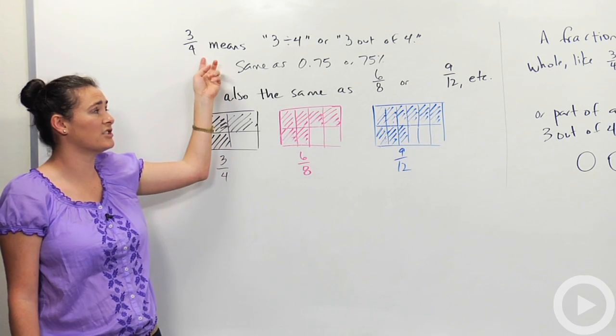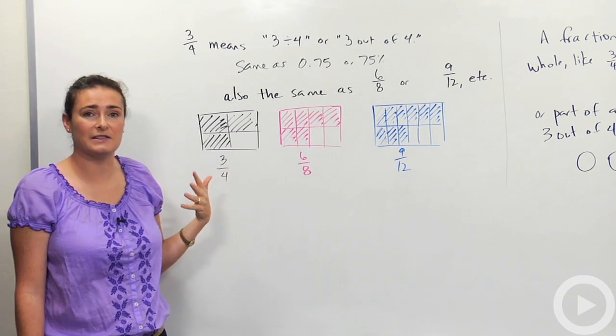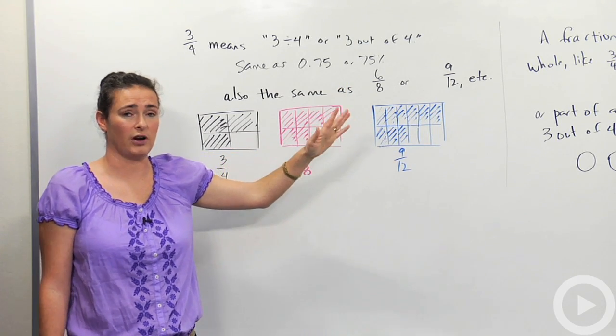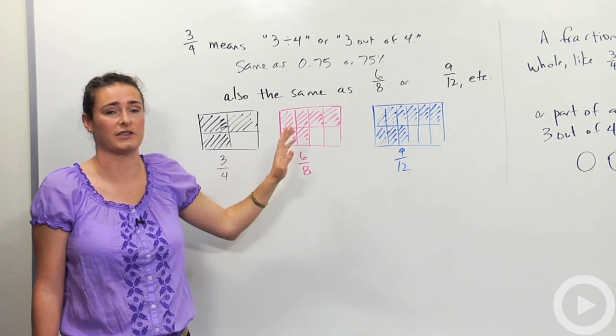If you want to work with a fraction 3 fourths, you could write it in different ways. Like you could write it as 6 eighths or 9 twelfths or on and on and on. Let me show you where I got those numbers, and then we'll look at pictures of them.